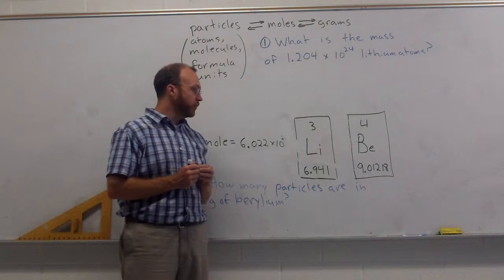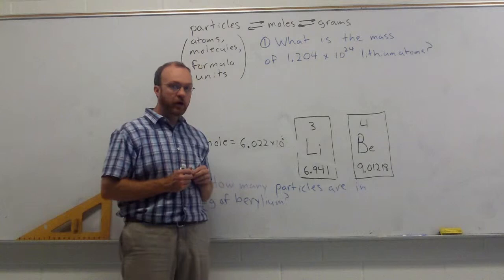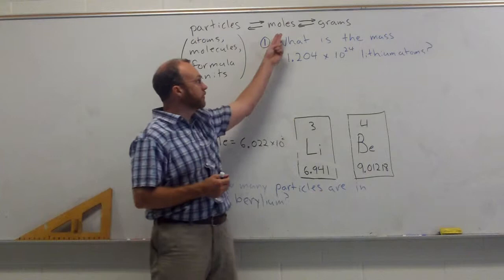Because of that, we can use the average atomic mass, the average number of protons and neutrons, as what we call a molar mass. That is the number of grams in one mole, and that allows us to switch from moles to grams, or grams to moles.